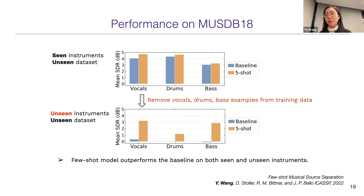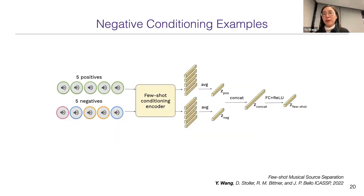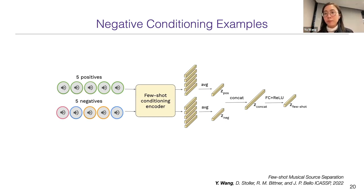We report performance on MUSDB18. Since MUSDB18 only contains three common instruments all present in our training sets, we redo the experiments by removing vocals, drums, and bass from training data to evaluate on an unseen instrument scenario. In the unseen instrument case, the baseline can do nothing because those instruments aren't in its training vocabulary, but the few-shot model is still able to separate them with a reasonable SDR score. We also explore negative conditioning samples — providing information about what instrument we don't want to separate — and find that this additional information further improves separation quality.